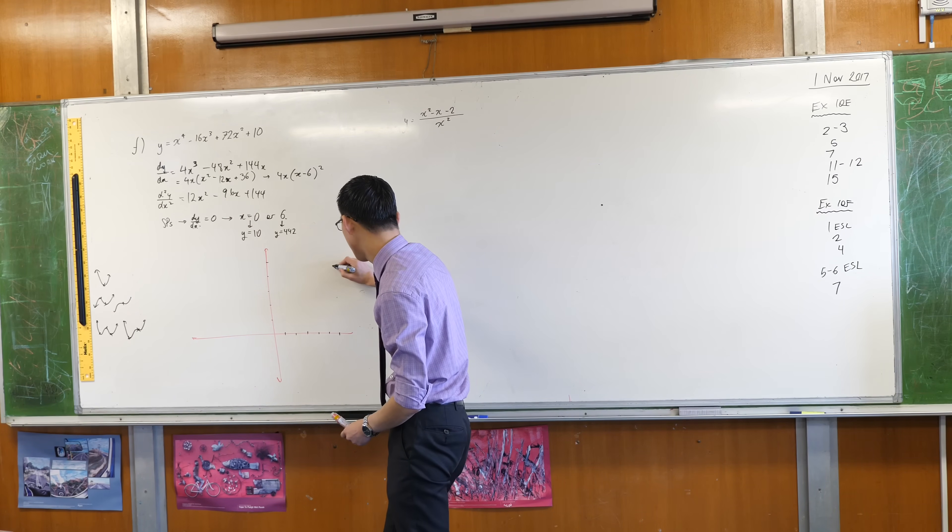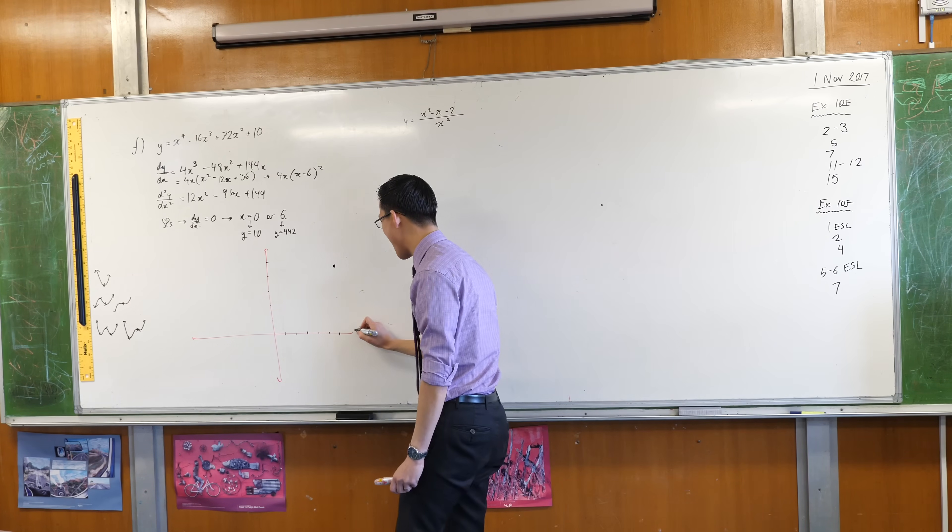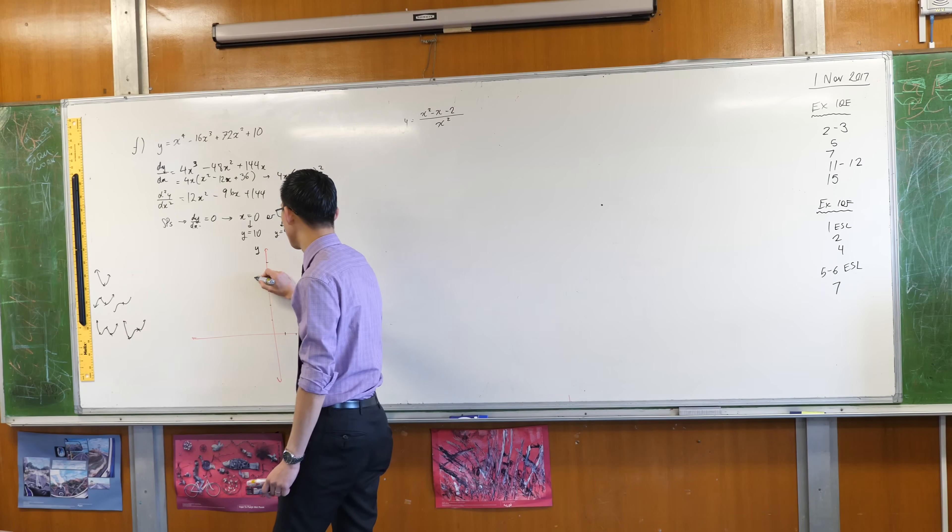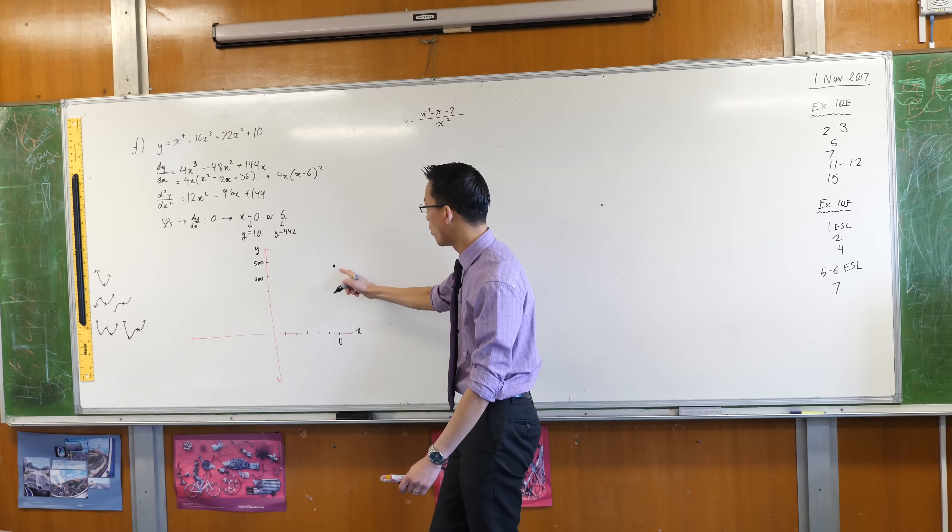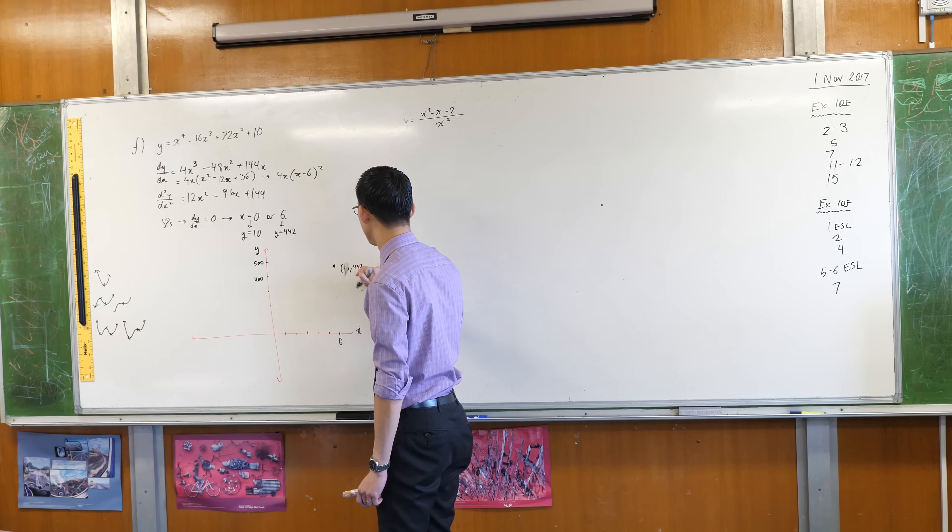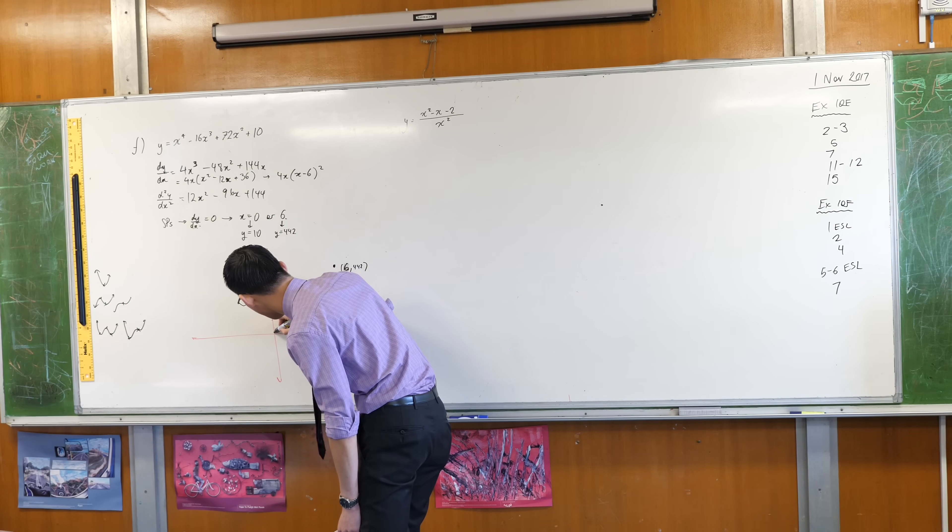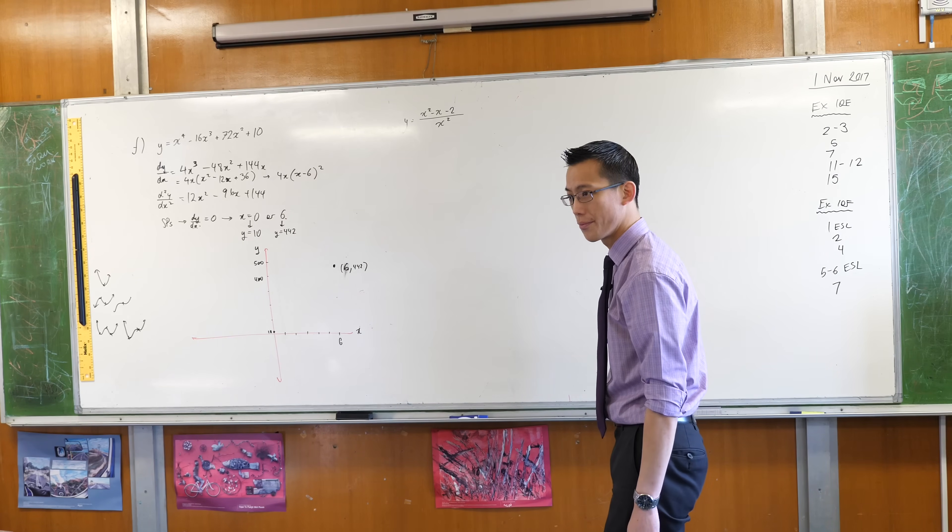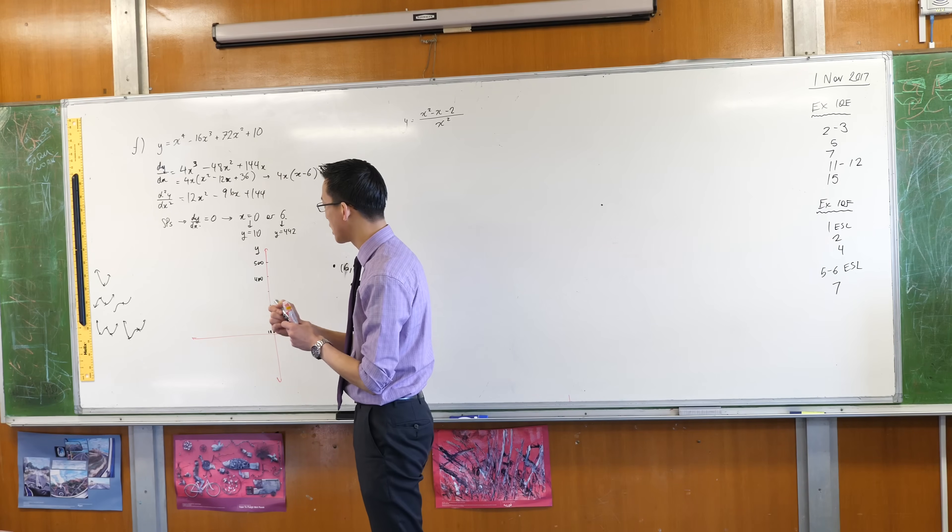When x equals six, one, two, three, four, five, six, I'm somewhere between 400 and 500, so let's call that over here. The x and y axes are not the same scale but they don't need to be, so I'm okay with that. If this is 400 and this is 500 and this is x equals six, then that point there is six comma negative 442. And of course I also have my y-intercept here, so that's going to be way down here at 10.